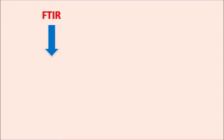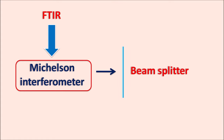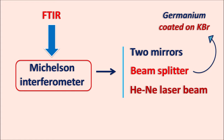An important component within the FTIR is the Michelson interferometer. This component acts like a monochromator but works by a different mechanism. It has three important components: a beam splitter that splits incident radiation into two equivalent beams, a helium-neon laser beam responsible for accuracy in FTIR, and two mirrors — one movable and one fixed. The beam splitter is made of germanium coated on potassium bromide.